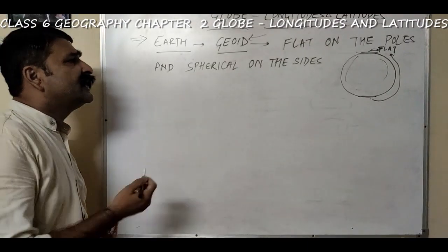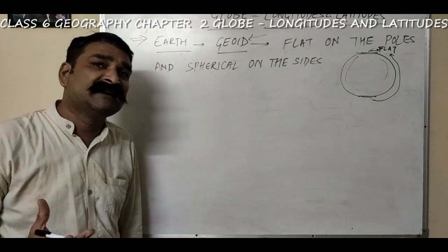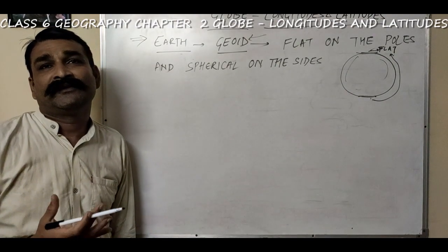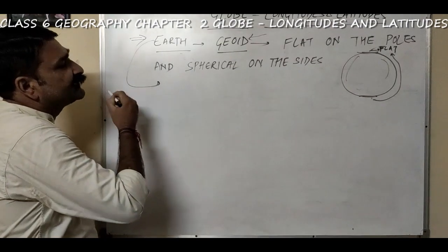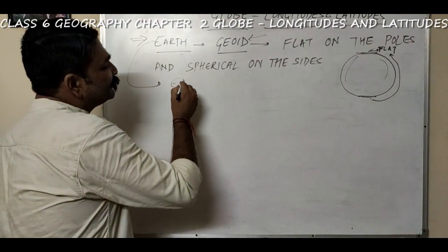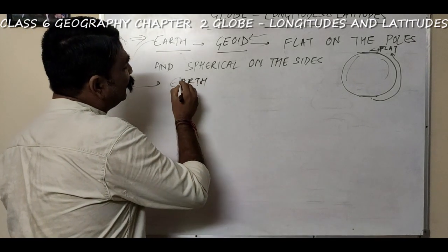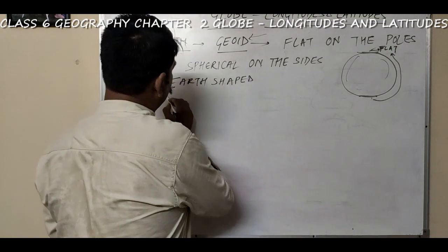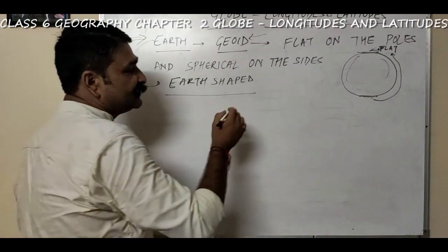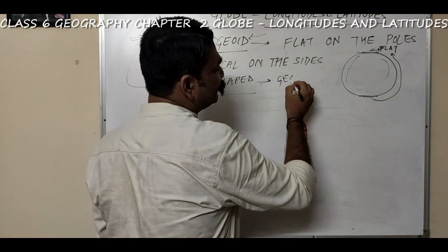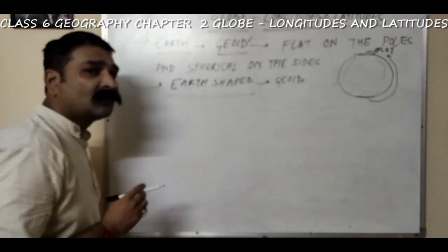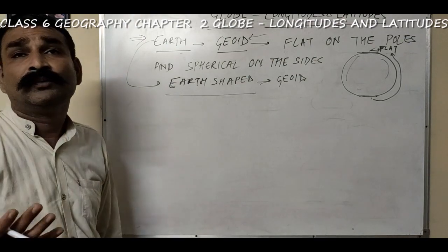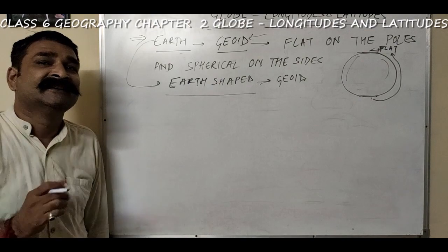This type of structure — flat at the poles and rounded at the surrounding or periphery areas — is known as geoid. The word geoid basically means 'earth-shaped'. So the shape of earth is earth-shaped, and that particular shape is known as geoid.